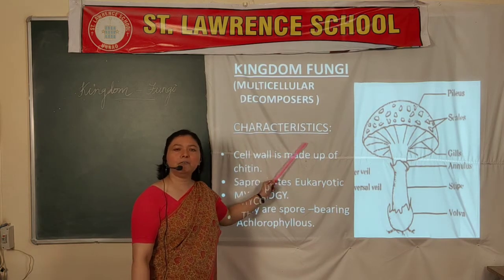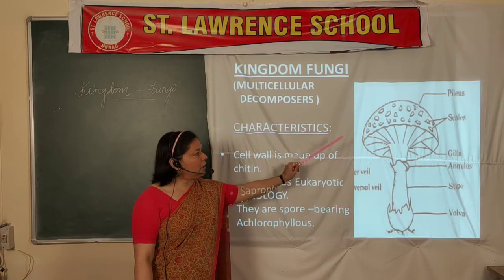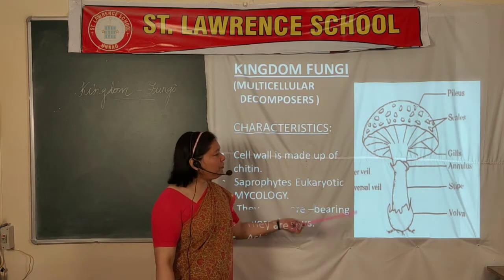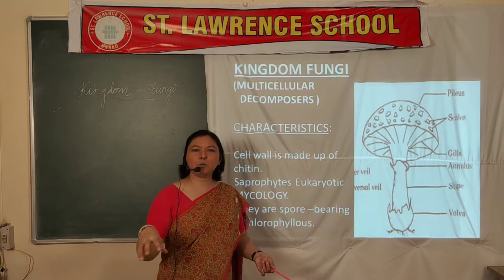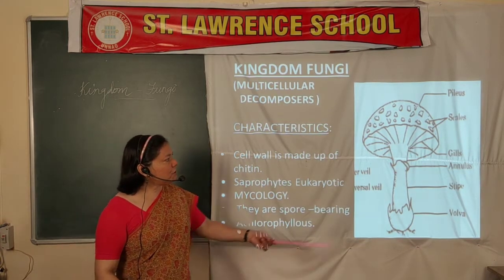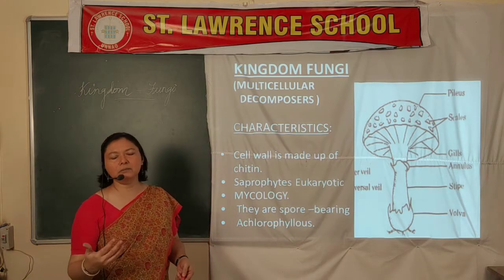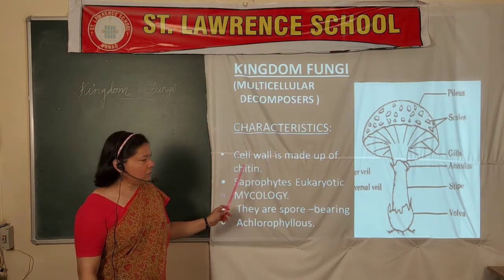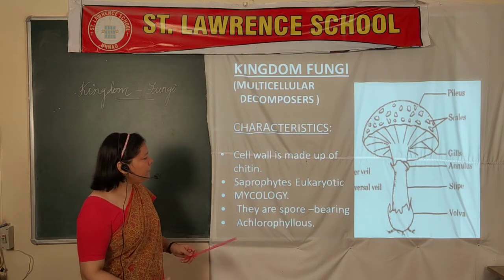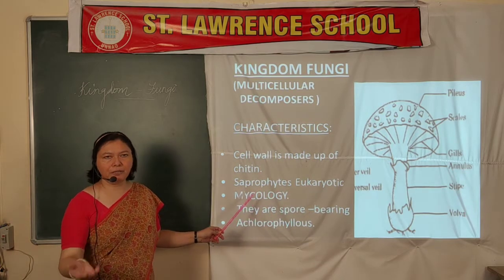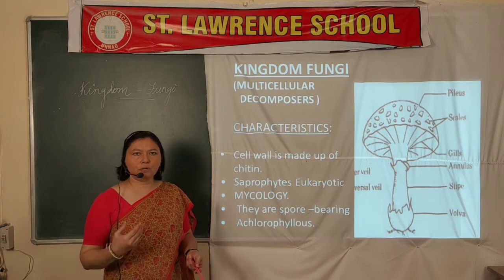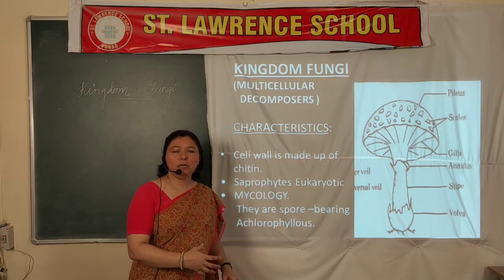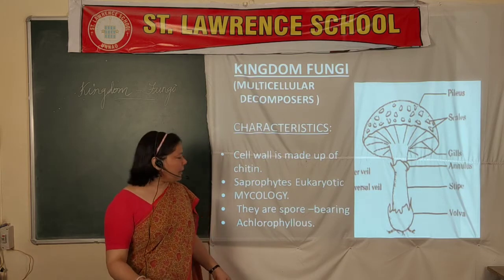The general characteristics of kingdom Fungi — you must have commonly seen mushrooms during the monsoon time, around logs and in places with wet garbage. These umbrella-shaped structures belong to kingdom Fungi. Their cell wall is made up of chitin. They are saprophytes — they depend on other organisms for their food and cannot prepare their own. They are eukaryotes. The study of fungi is called mycology.